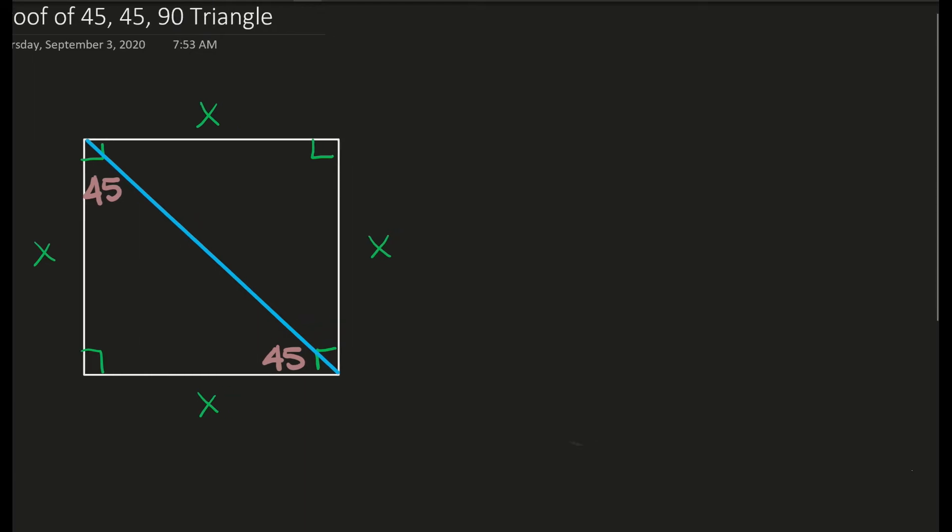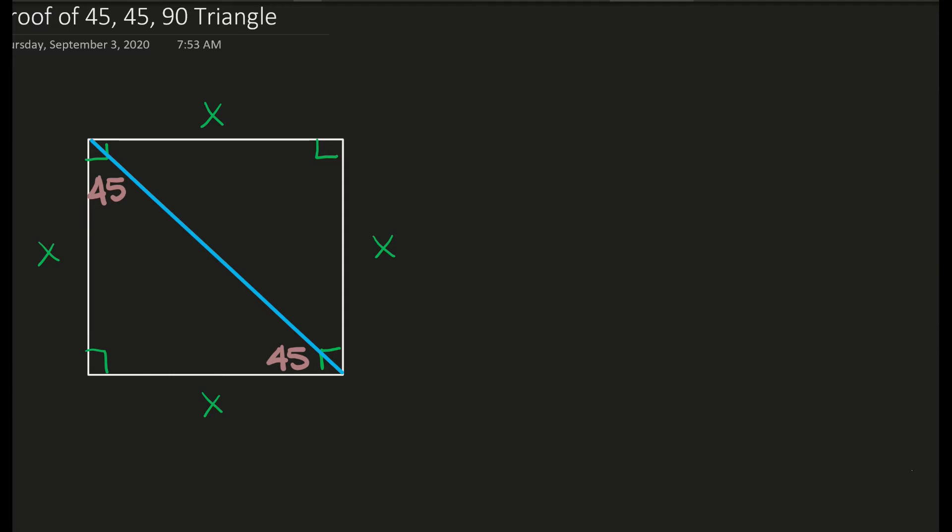I'll come over here to the right and redraw this. So here, 45 degrees, 45 degrees, and now my leg lengths have not changed. This is still the leg that used to be a part of the square. So those leg lengths are x because all the sides were the same.